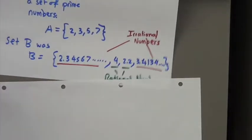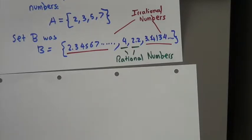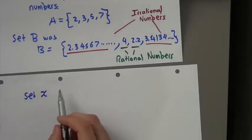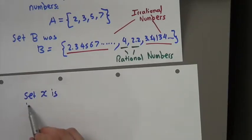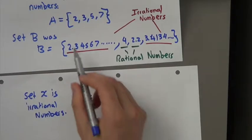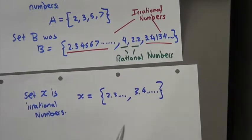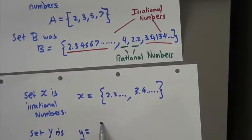Anyway, how does this fit into sets? So in this case, if I now say set x, x is irrational numbers. Then x would be that number, 2.3, and 3.4 continuous. And then set y is rational, then it would be y equals 4 and 2.2.